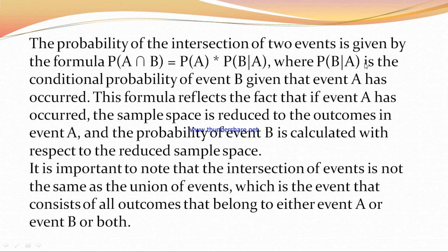Where P(B|A) is the conditional probability of event B given that event A has occurred. This formula reflects the fact that if event A has occurred, the sample space is reduced to the outcomes in event A, and the probability of event B is calculated with respect to the reduced sample space.